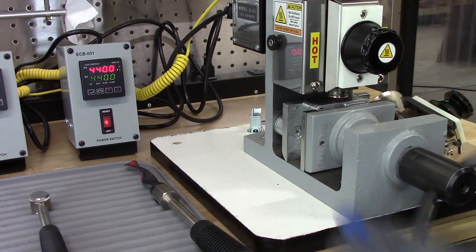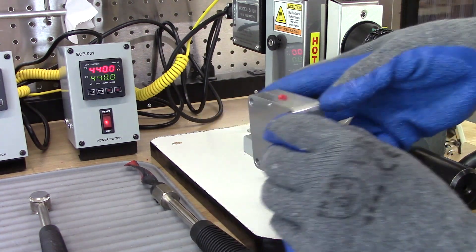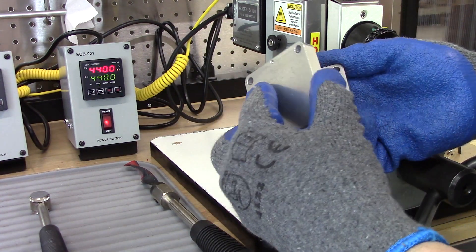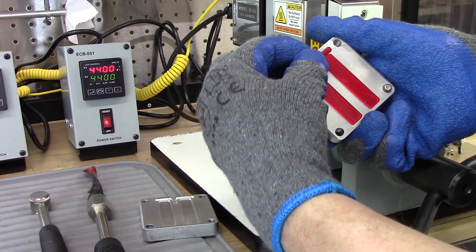Loosen the vice, then remove the mold. Remove the injection molded part from the mold.